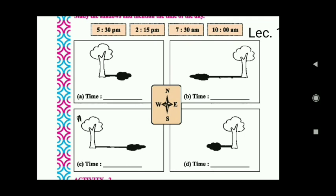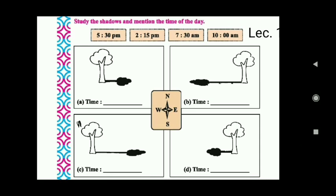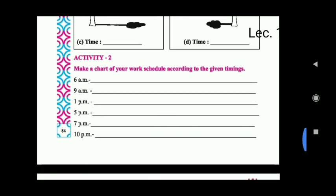In C, look at the east side, there is evening time. So here is 5:30 pm. And in D, the shadow is a little bit short, so that is the time 10 am.